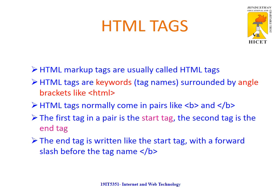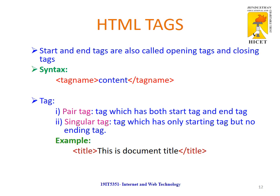HTML tags are called keywords and are surrounded by angle brackets. Tags normally come in pairs. The first tag is called the start tag and the second is called the end tag. The end tag always contains a slash. The start and end tags are also called the opening tag and the closing tag.